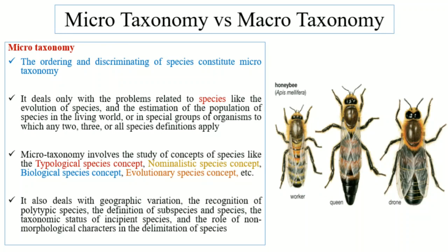The study, classification, and evolution of such organisms is also included in Microtaxonomy. In Microtaxonomy, we also study different species concepts, including the Typological species concept, Nominalistic species concept, Biological species concept, and Evolutionary species concept. It also deals with geographic variation — how species vary in geography.